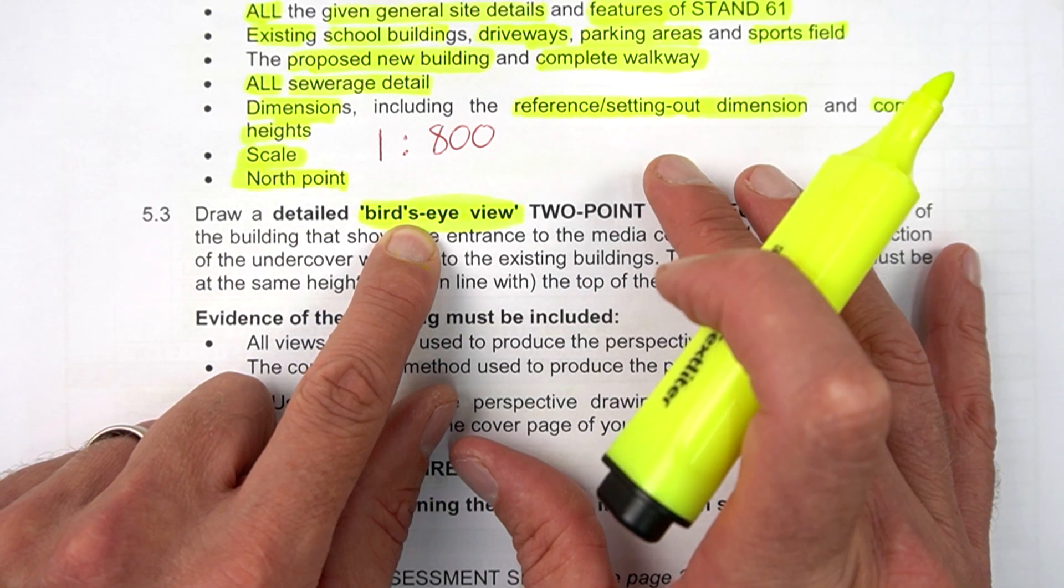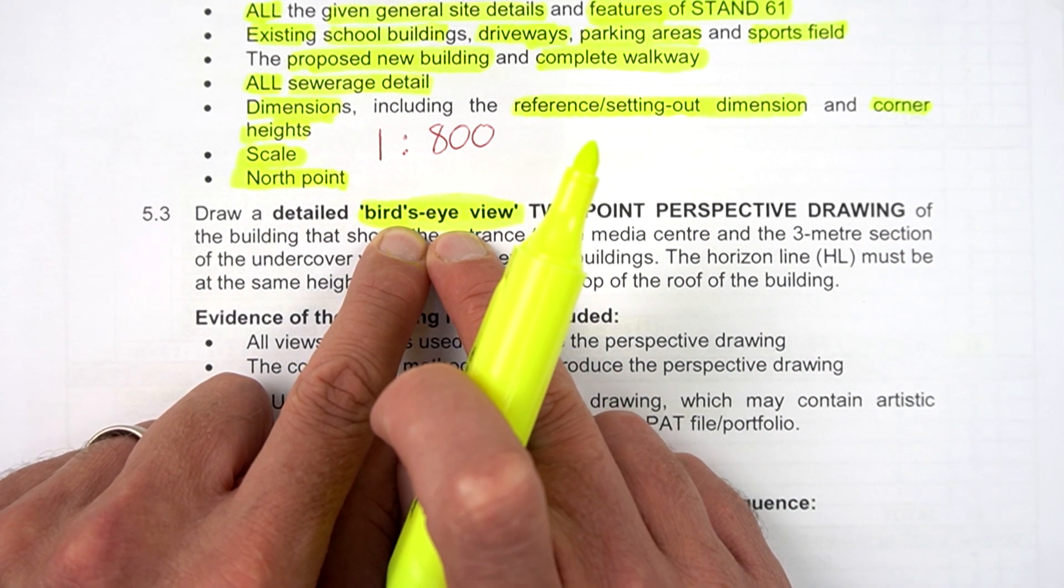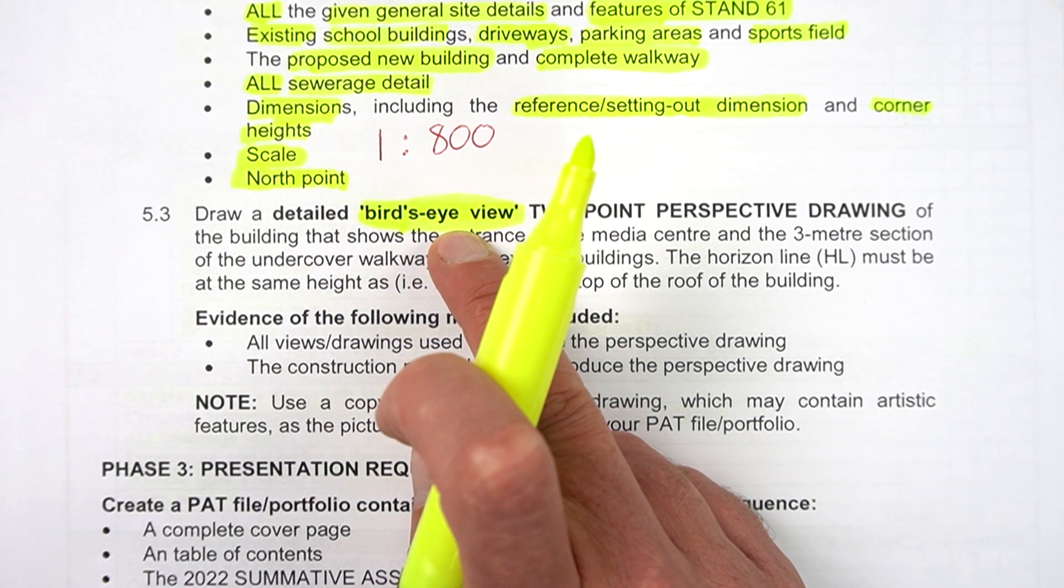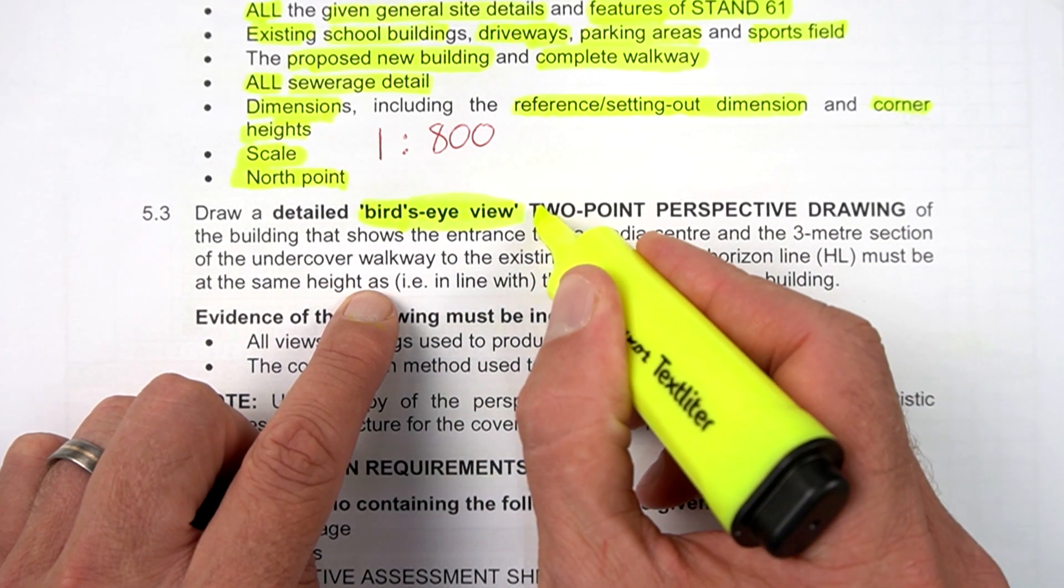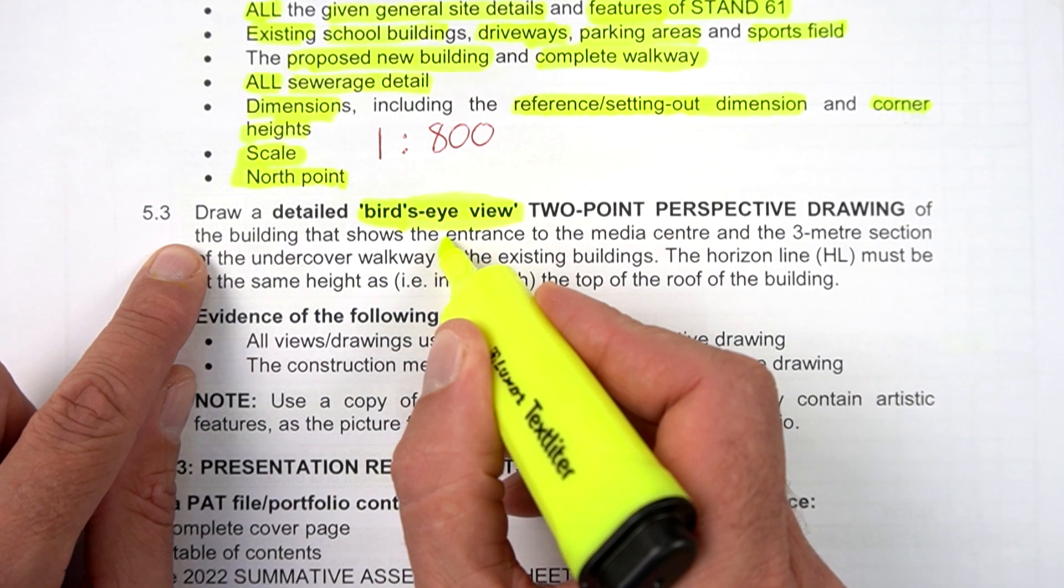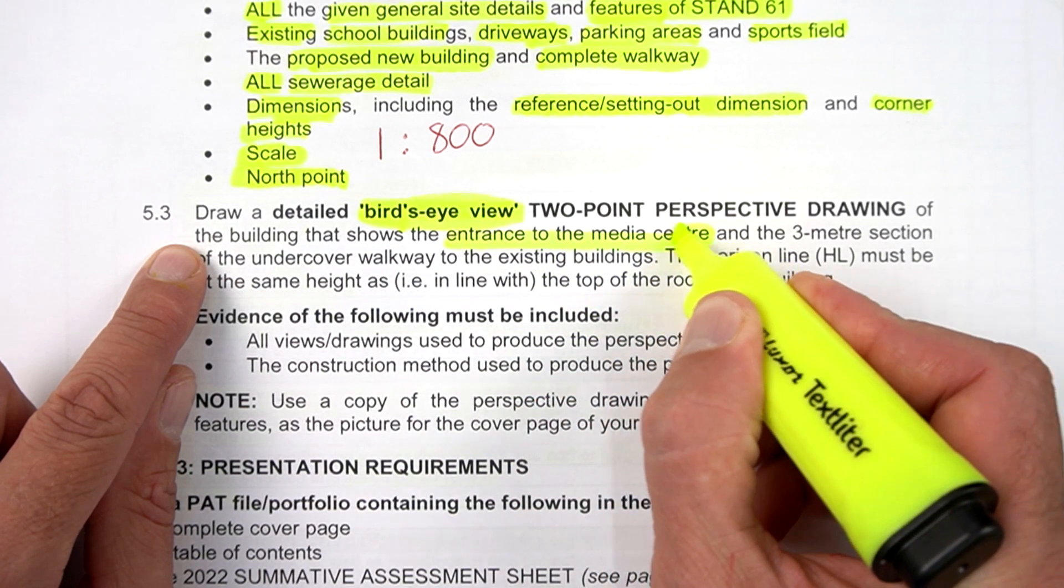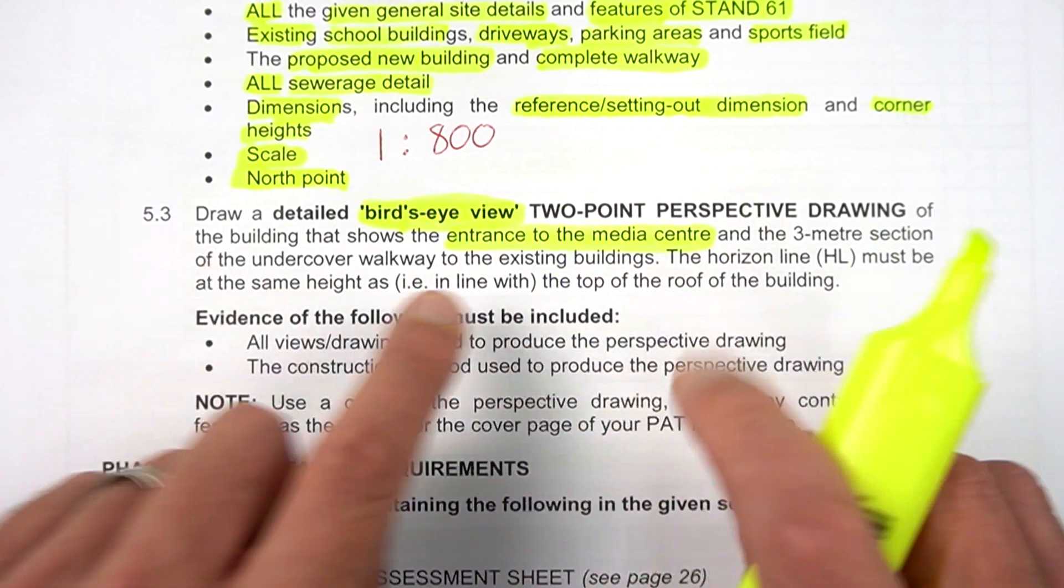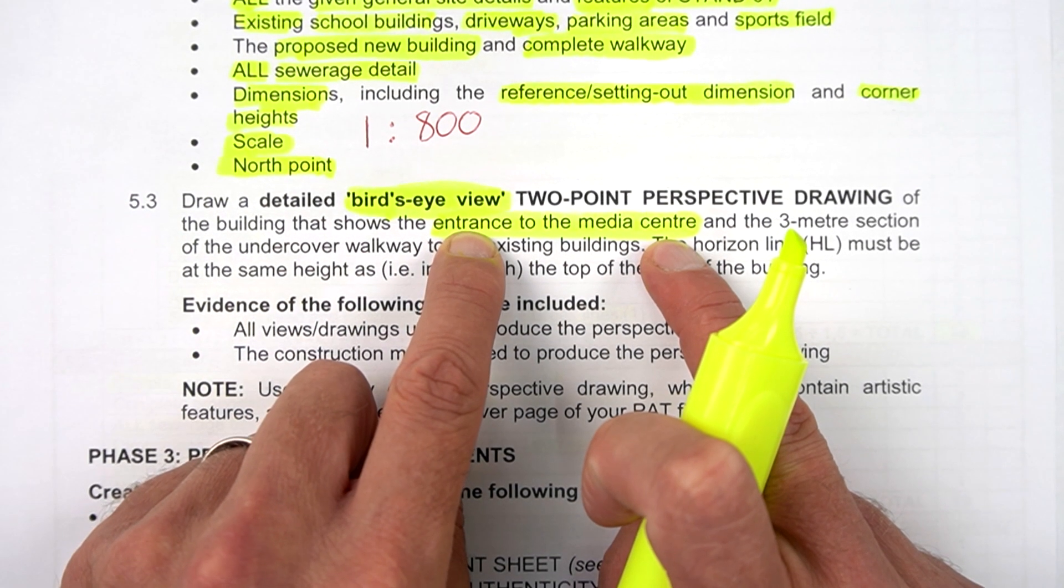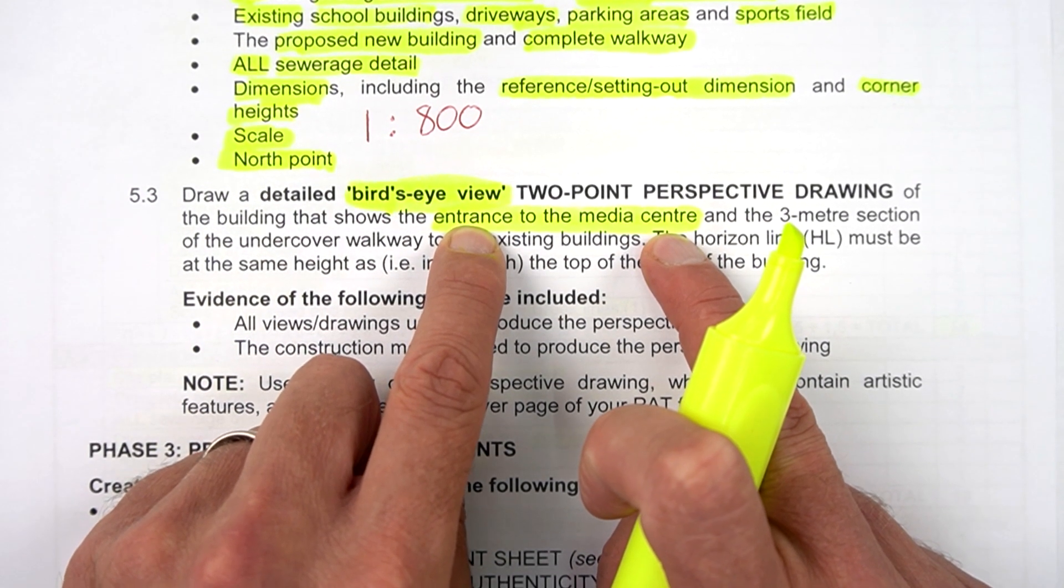You're not going to be standing on an eye level looking at this building. It's from above and it's going to be a two-point perspective drawing of the building that shows the entrance to the media center. So when you position your bird's eye view of your media center, make sure that you see the entrance.